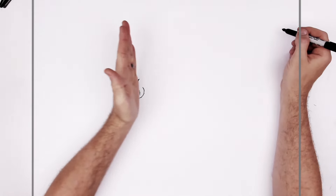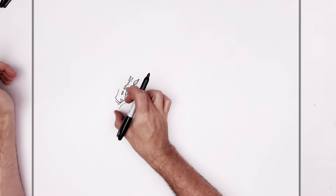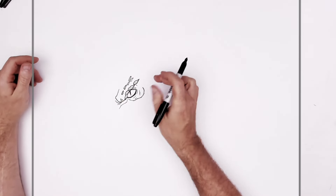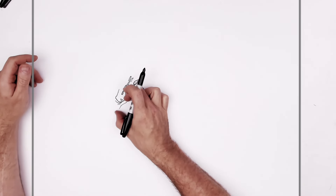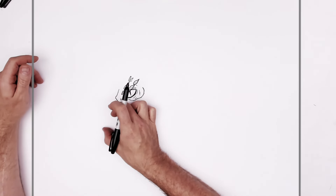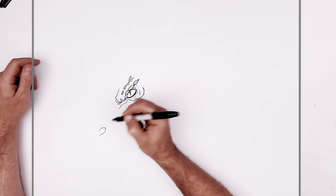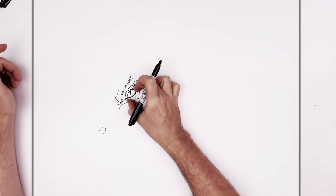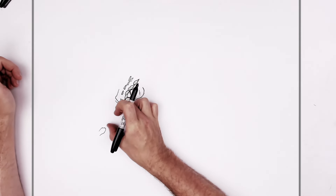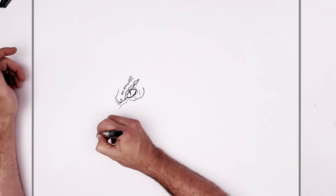We're going to go down about two eyes for the nose - one, two. We'll go for the skin of his nostrils sort of there, about two and a half, maybe one and a half. And then you've got that black nostril hole just there.